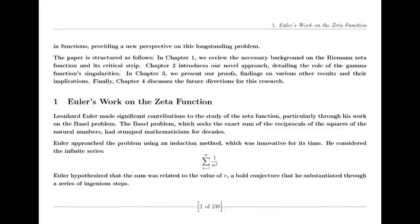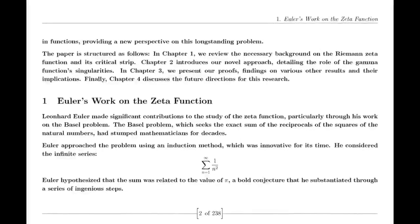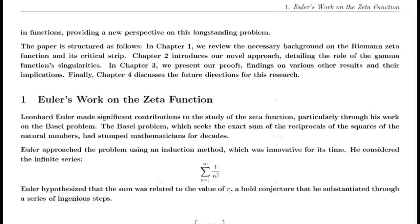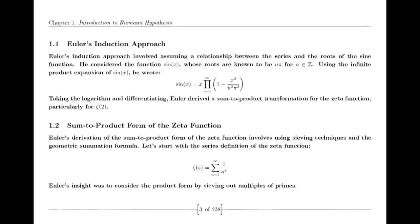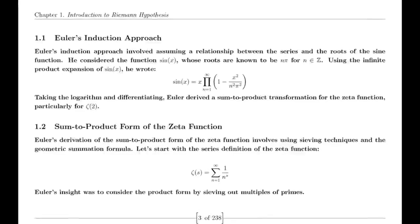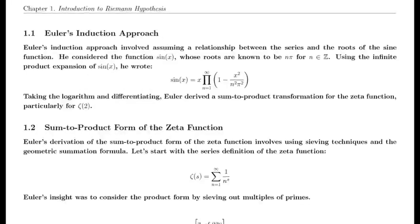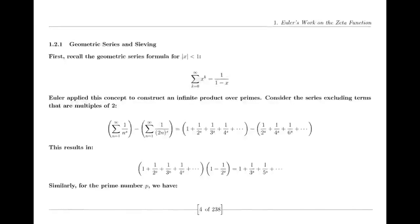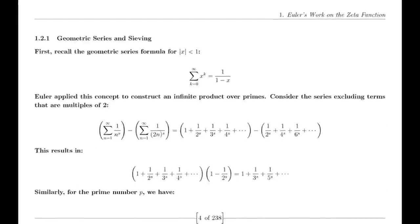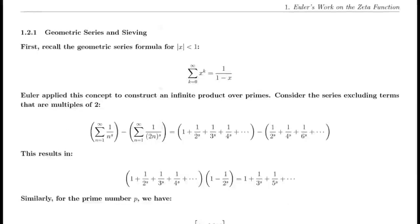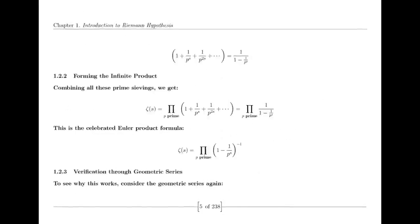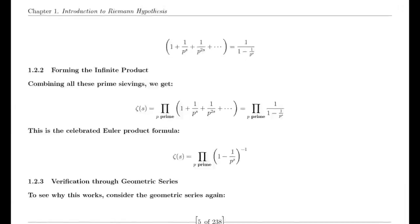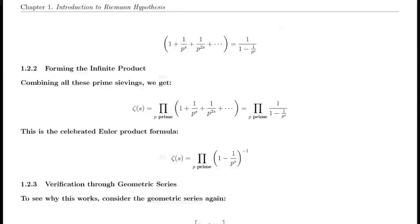One of Riemann's major discoveries was the reflection formula for the zeta function. This formula demonstrates a symmetry between the values of the zeta function at s and 1 − s. Specifically, ζ(1 − s) can be expressed in terms of ζ(s) using factors involving π, the gamma function, and trigonometric functions. This reflection formula is fundamental to the theory of the zeta function and provides deep insights into its structure.